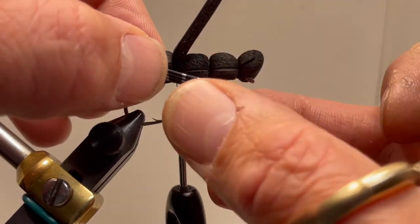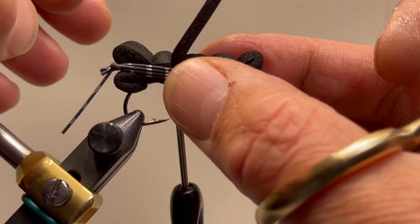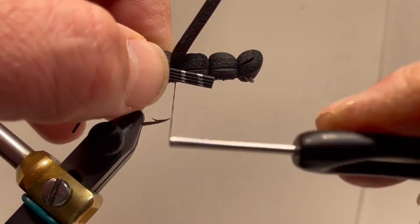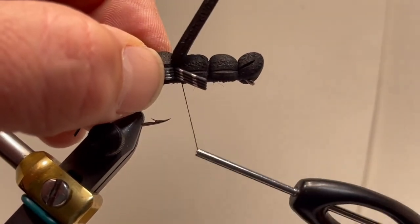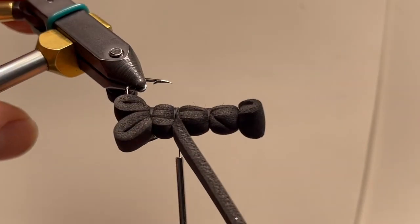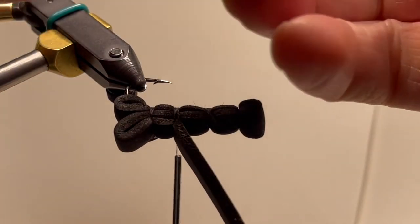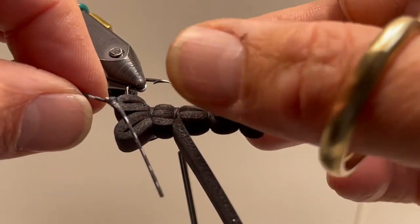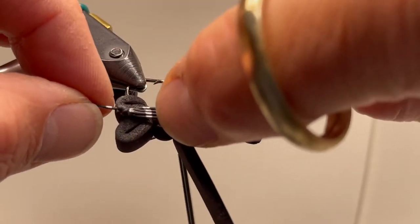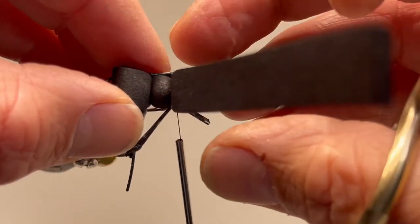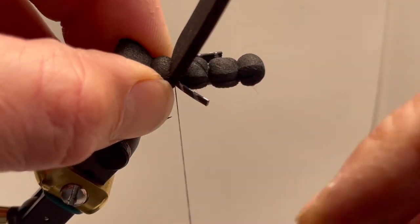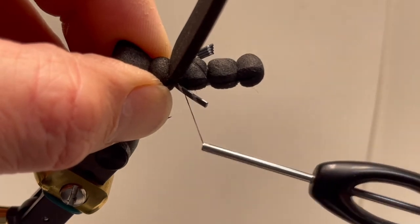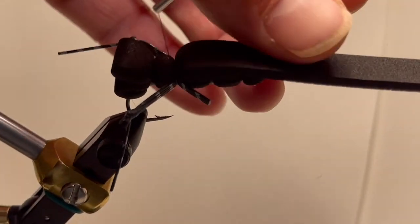We want that knot to get pretty much to the bend of the end of the foam there. And we're going to secure that leg to the side, spin the vise over, and then do the other side. Rotary vices help. If you don't have a rotary vise, it's not that big of a deal.